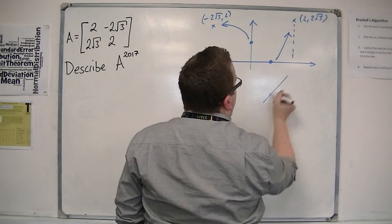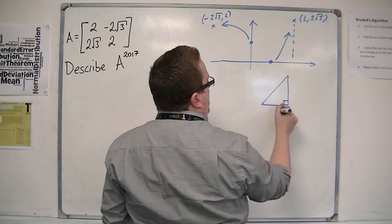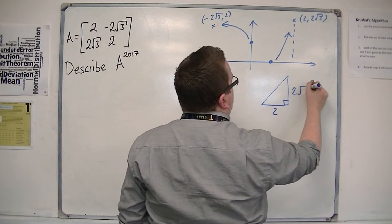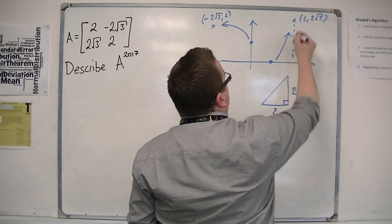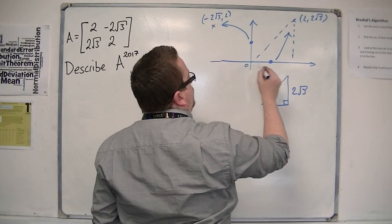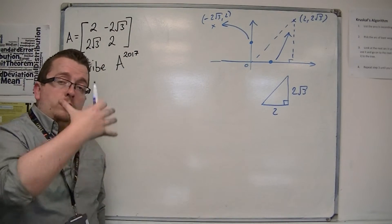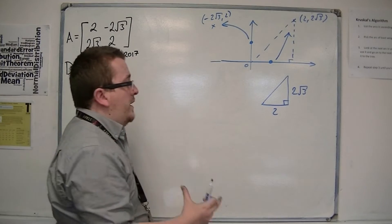So if we look at one of the vertices, one of the points. So it has a base of 2, a height of 2 root 3. So that's my right-angled triangle with the origin. So that's me looking at this triangle here. I need to work out the hypotenuse using Pythagoras.